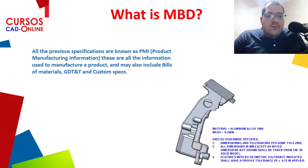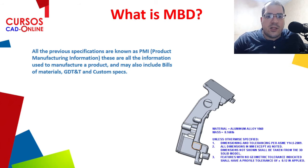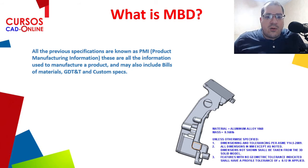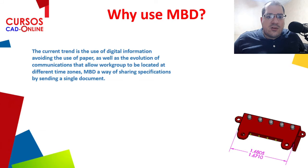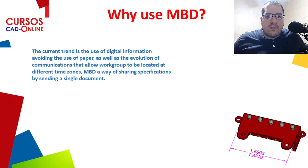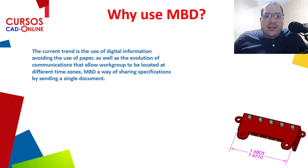All this manufacturing information is known as PMI — Product Manufacturing Information — and it includes all the information used to manufacture a product. It may also include bills of materials, GD&T, and custom specifications. The current trend is using digital information, avoiding printed paper, and as the evolution of communication allows workgroups based at different locations worldwide, MBD is a good way to share specifications in a single document.